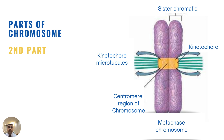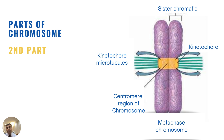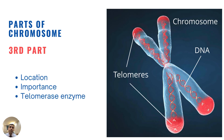The centromere also has a protein complex called the kinetochore, which forms at this location. The kinetochore attaches the duplicated chromosome to the mitotic spindle fiber in a manner that causes the sister chromatids to be pulled apart. This kinetochore protein helps the chromosomes bind to the kinetochore microtubules and move along the spindle fibers into the poles.